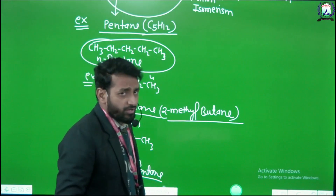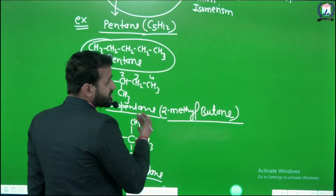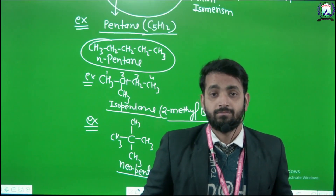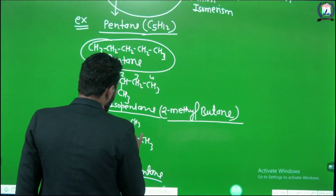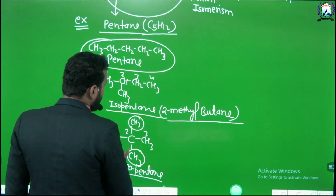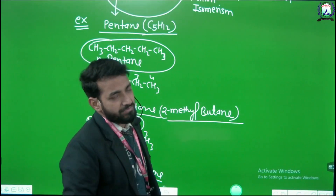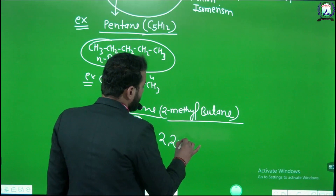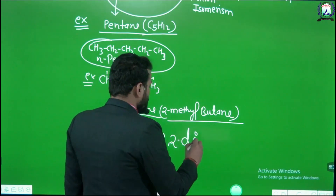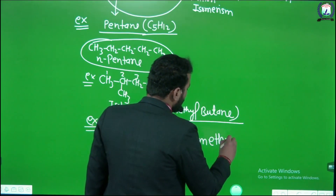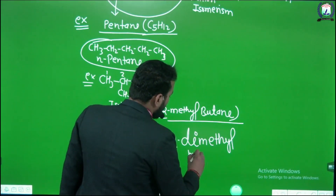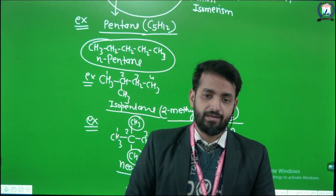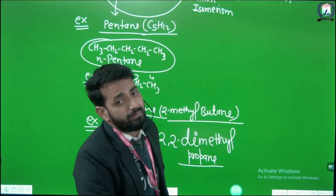In neopentane, whether you number from the left, right, top, or bottom, the longest chain is only 3 carbons. With two methyl groups at the same position (position 2), we use the prefix 'di', giving us 2,2-dimethylpropane. So in chain isomerism, the difference is in the carbon skeleton.